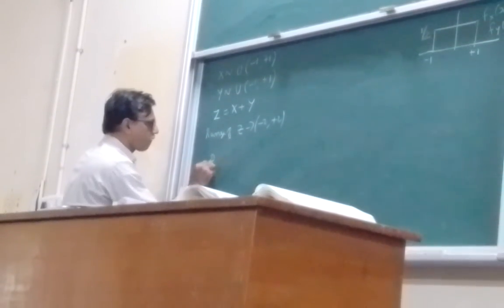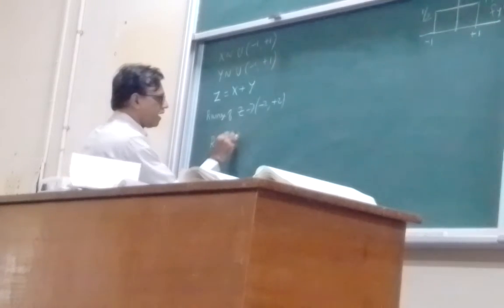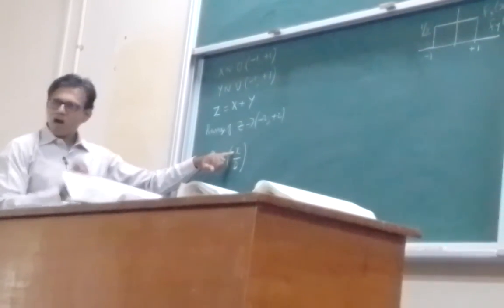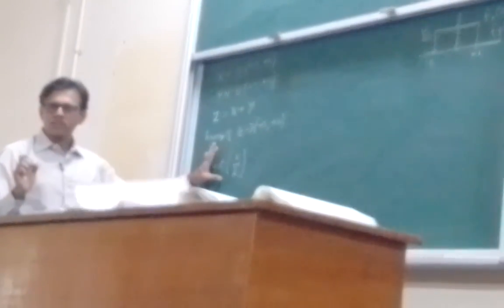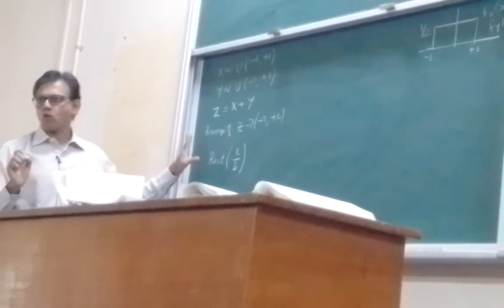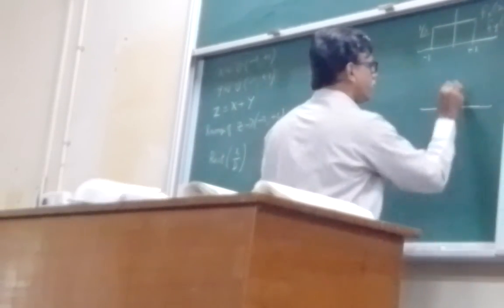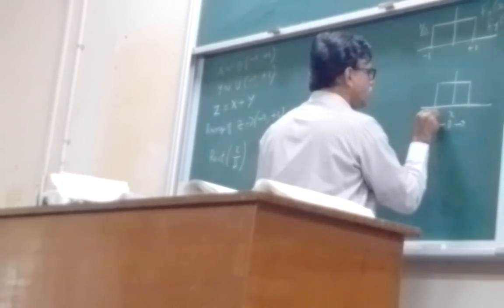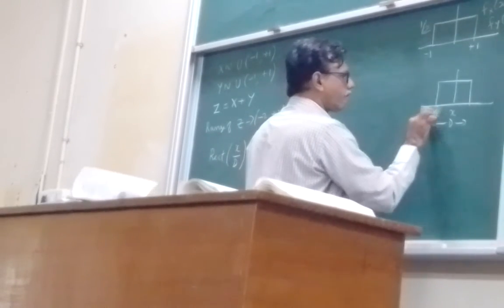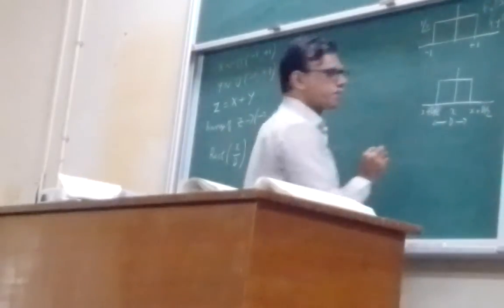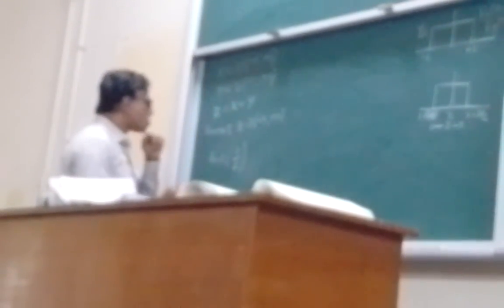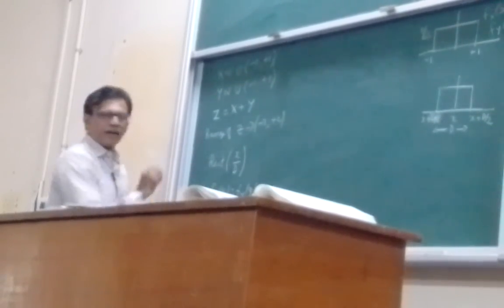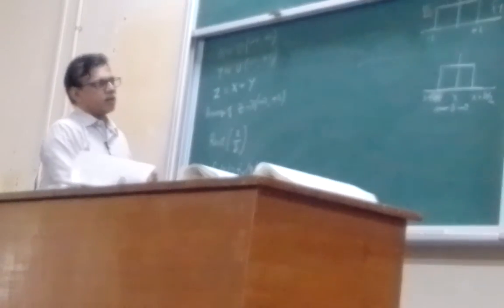We represent the uniform density using a rectangular function rect(x/d), which is a rectangular function centered around x of width d. Using this notation, f_X(x) equals f_Y(y) equals (1/2)·rect(x/2), centered at 0 with width 2. Alternatively, the rectangular function can be expressed as a difference of unit step functions: u(x + d/2) minus u(x - d/2), where u is the unit step function that equals 1 for positive argument and 0 for negative.